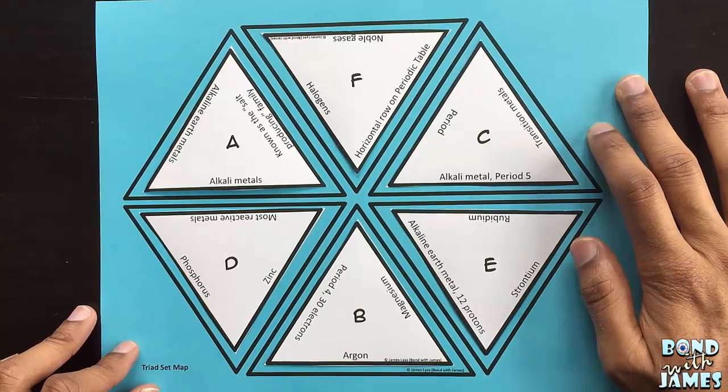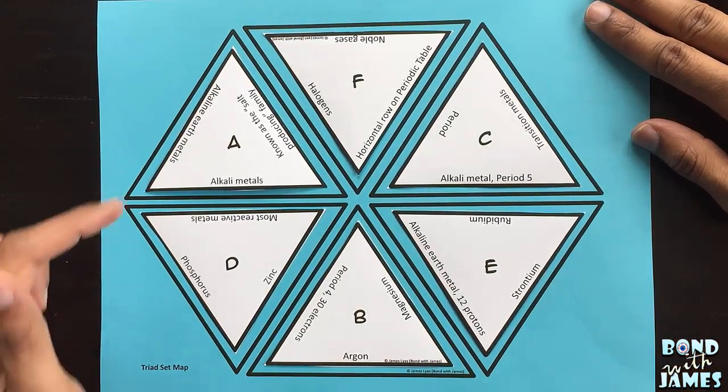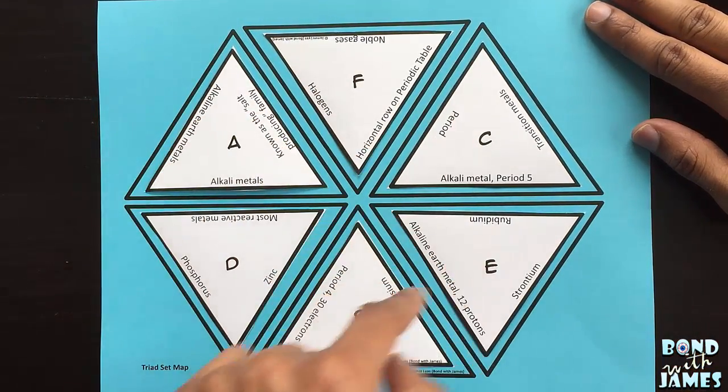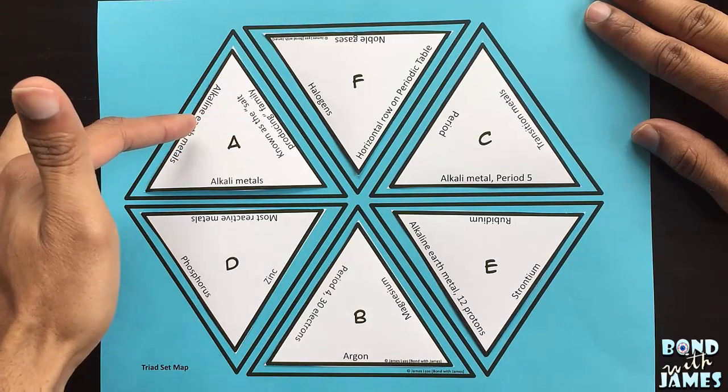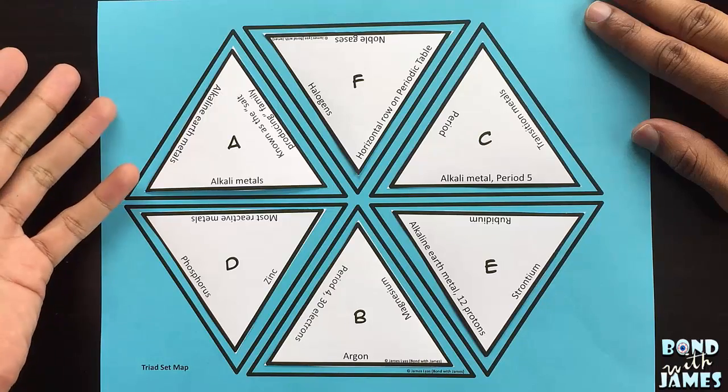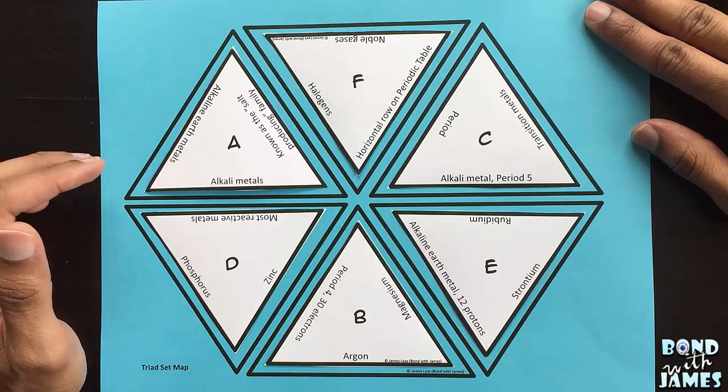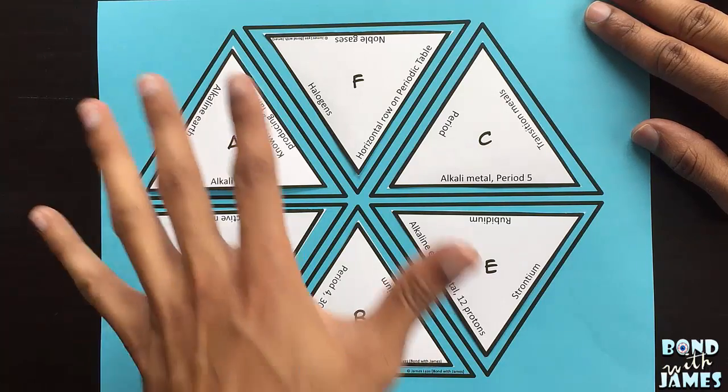The object of each set is the same. Now you'll notice on each of the pieces there are clues on each side of the triangle set. There's also a diamond set and there's also a rectangular set and it's the same setup.